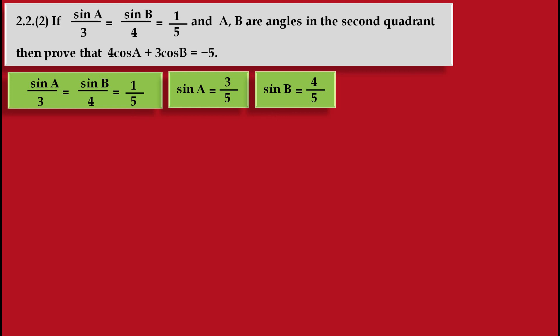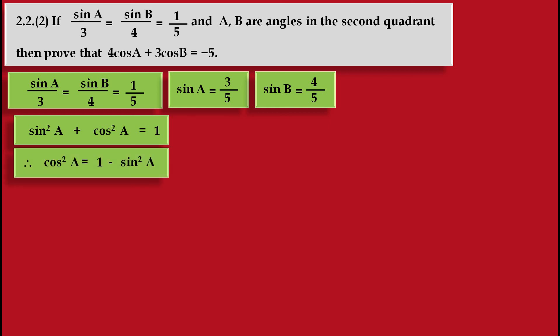Now we have values of sin A and sin B. By using these values, we have to find cos A and cos B. So we have to use an identity. For angle A, we use the identity sin² A plus cos² A is equal to 1. We know the value of sin A, so we shift the sin² A term to the right hand side and keep cos² A on the left hand side. So we get cos² A is equal to 1 minus sin² A.